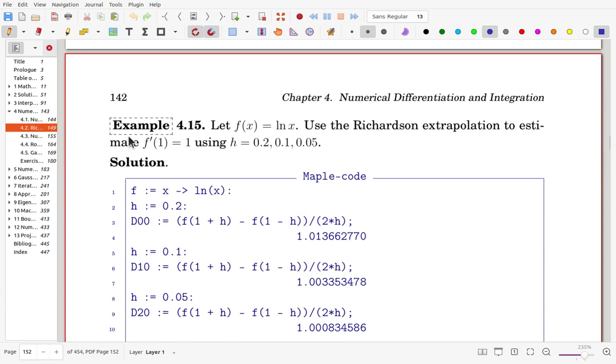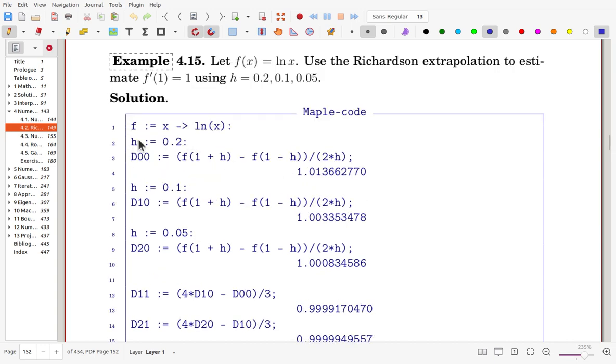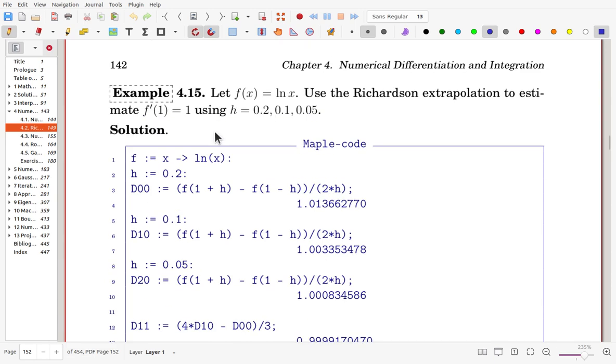In this example, we try to use the Richardson extrapolation to estimate derivative of function. Once f of x is logarithm x, then f prime at 1 is 1. Now, we'll use h is 0.2, 0.1, and 0.05. We define the function, and h is 0.2, and here, the central scheme for derivative is given in this way. Now, the x is 1, so that here, f at 1 plus h minus f at 1 minus h over 2h for given h. We have this quantity.